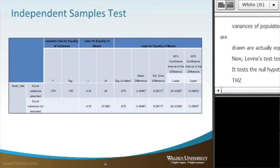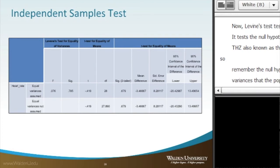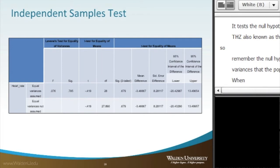Levene's test assesses this assumption. It tests the null hypothesis that the population variances are equal. This is also known as the homogeneity of variances or the homoscedasticity. So, remember, the null hypothesis is that there's equal variances or the null hypothesis that the population variances are equal. When we look at this, we actually have two rows of numbers.